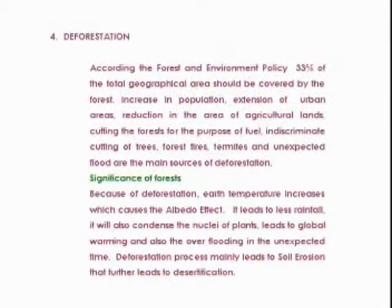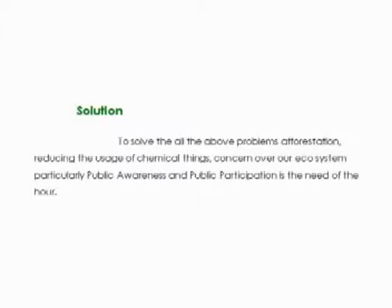When global warming increases, the sea level will rise and intrude into villages or even town areas. When the sea intrudes, agricultural land will be spoiled and there will be heavy loss in production, leading to unemployment. Furthermore, when global temperature is high, mosquitoes that spread diseases like dengue and yellow fever will grow more and more.